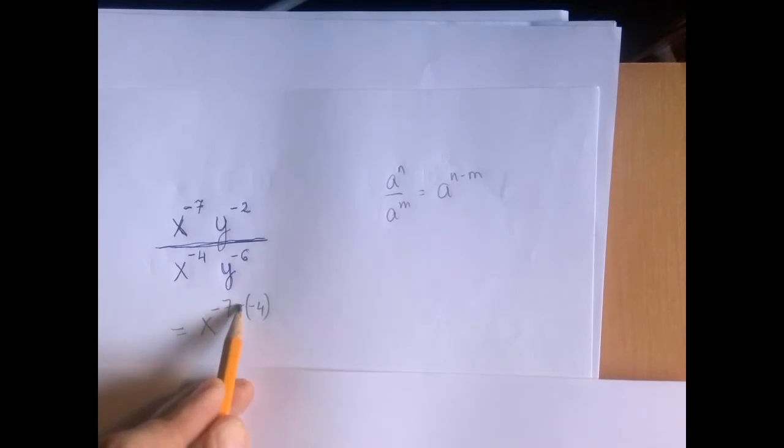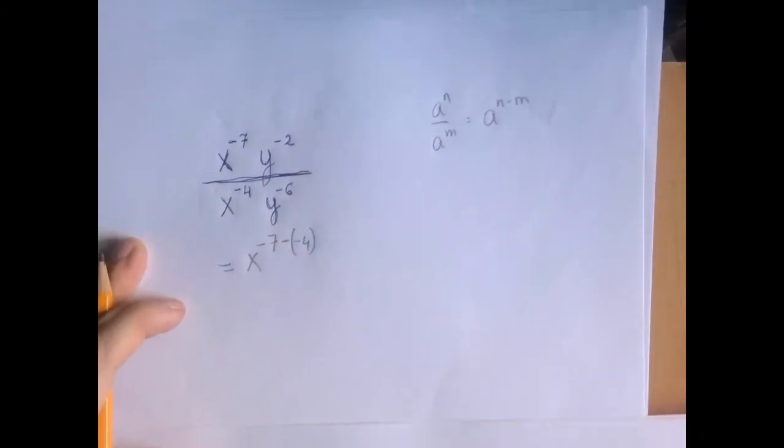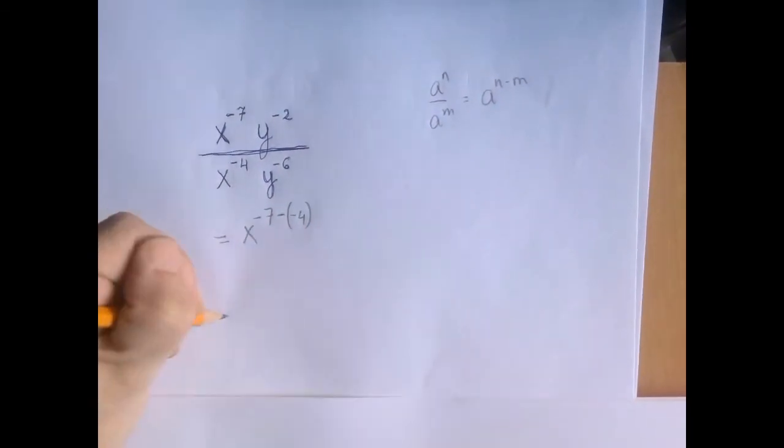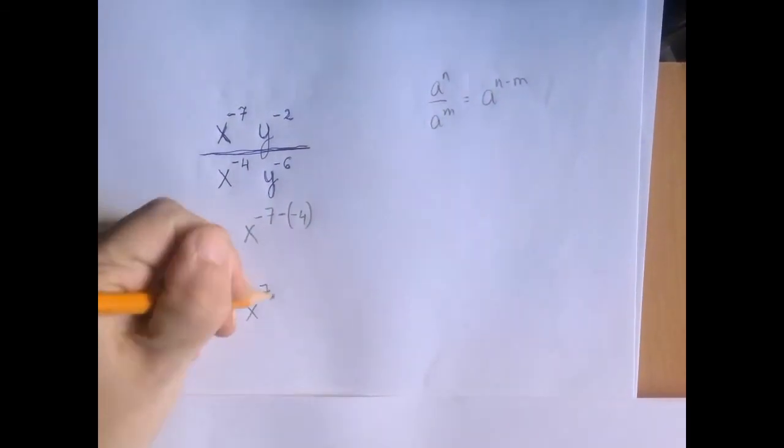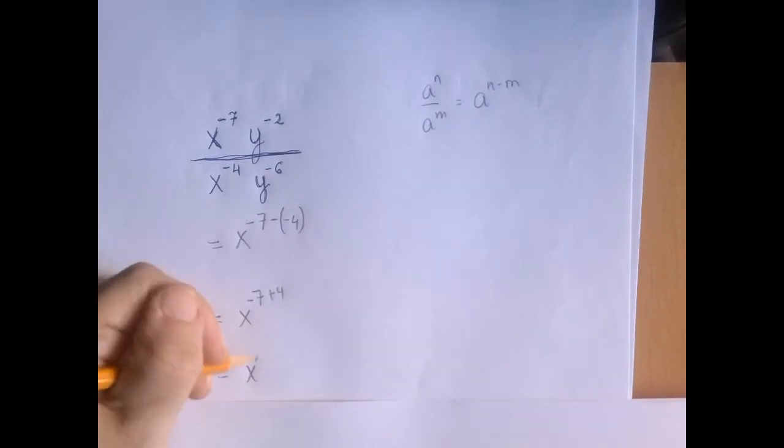Right? We are subtracting the exponents from each other. And that is x to the negative 7 plus 4, which is x to the negative 3.